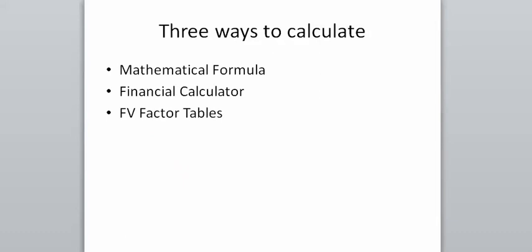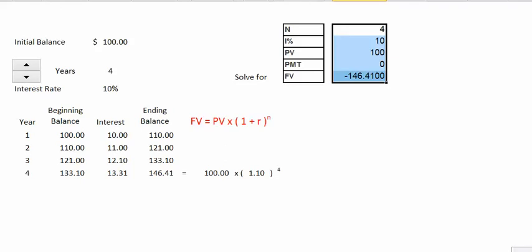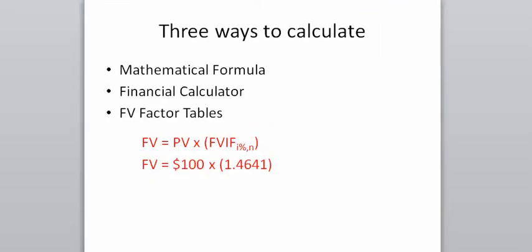To review, we can calculate future values using our mathematical formula — taking the $100 and multiplying it by 1.1 to the fourth power — using our financial calculators, or using a future value interest factor, which in this case was 1.4641. We multiply that factor by the $100 present value to solve for our future value.